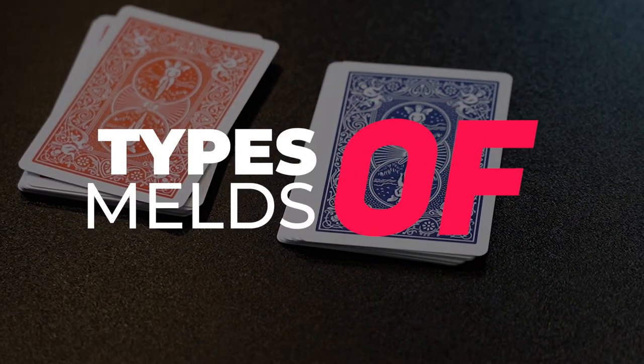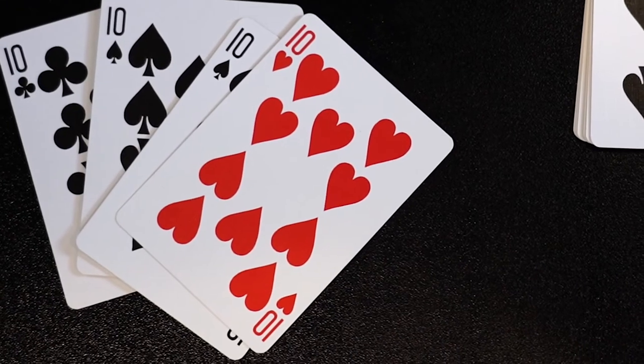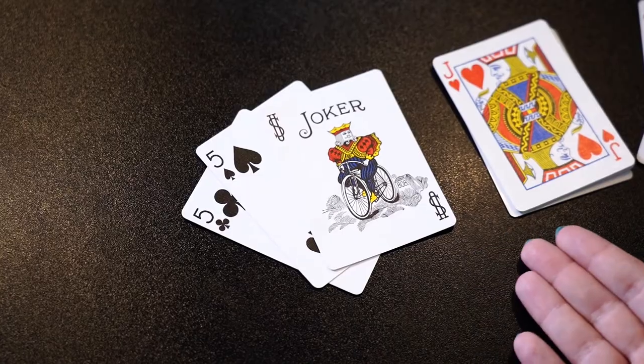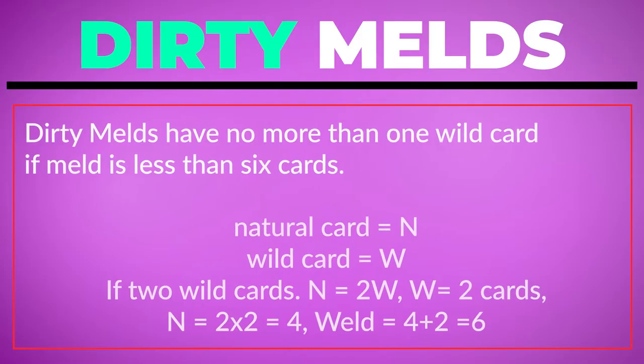Let's go over the types of melds. A clean meld has no wild cards present. Dirty melds have at least a single wild card and no more than one if the meld has less than six cards. Wild melds are only made out of wild cards: Twos and jokers.